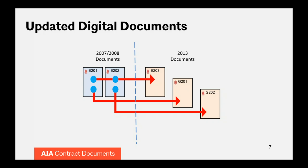Both documents were all-inclusive on their subject. They dealt with certain things that would stay static — like scope of modeling and format — but also included more fluid items such as the big tables in the back half of those documents, where authorized uses depended on the project participants involved. But in the E-202, you had to identify all those parameters at the time you executed the agreement.